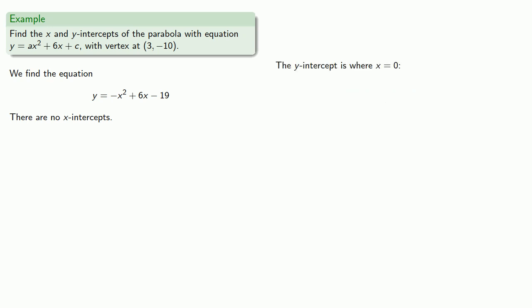The y-intercept is where x = 0. So equals means replaceable. We'll replace x with 0 and find y = -19. And so the y-intercept is at (0, -19).